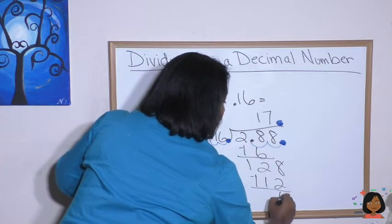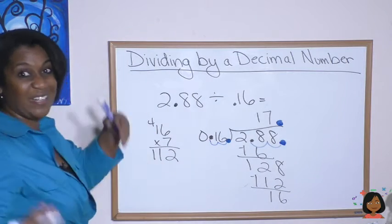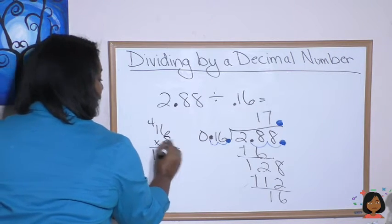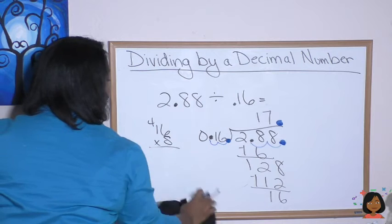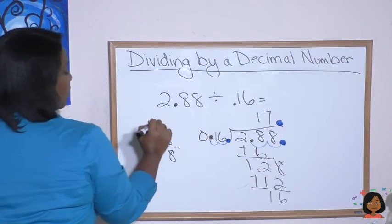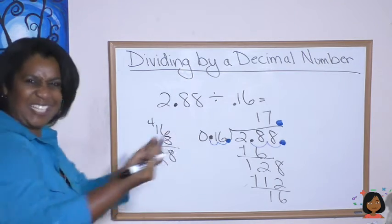2 minus 1 is 1. Oh, that means we can go in 18. Look. 16 times 8. Let's try that. I think it looks like I've got one more. 8 times 6 is 48. 8 times 1 is 8. 12. Yes. It goes in equally. So I'm going to erase this.